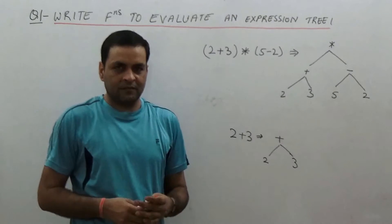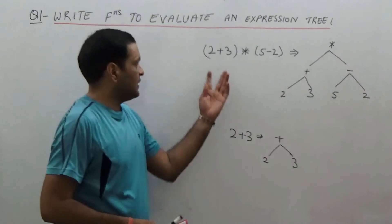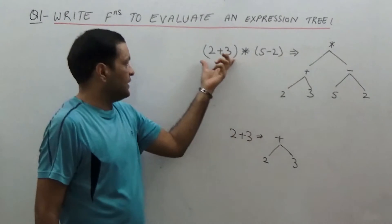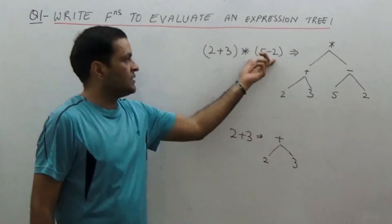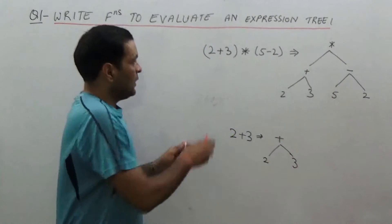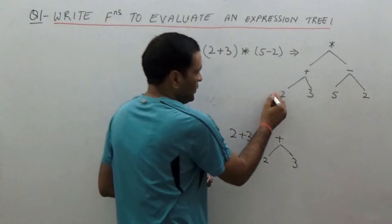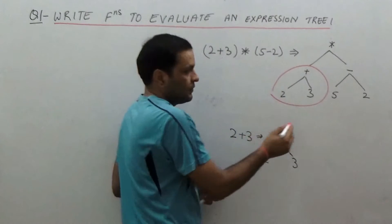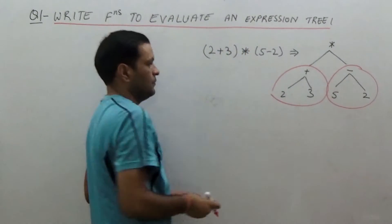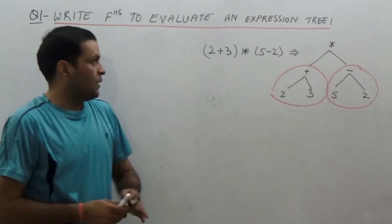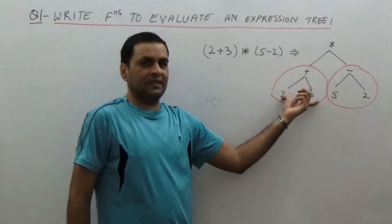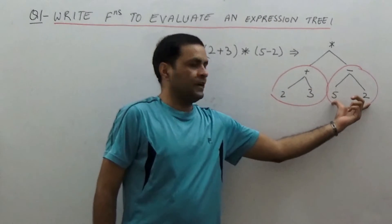Now this was a very simple expression. If we have a complex expression like 2 plus 3 into 5 minus 2, there is a subtree for 2 plus 3 and a subtree for 5 minus 2. Then we apply multiplication on the result of these two subtrees.